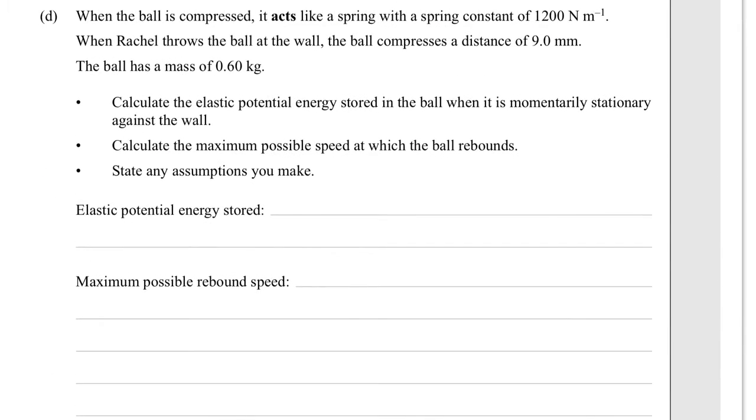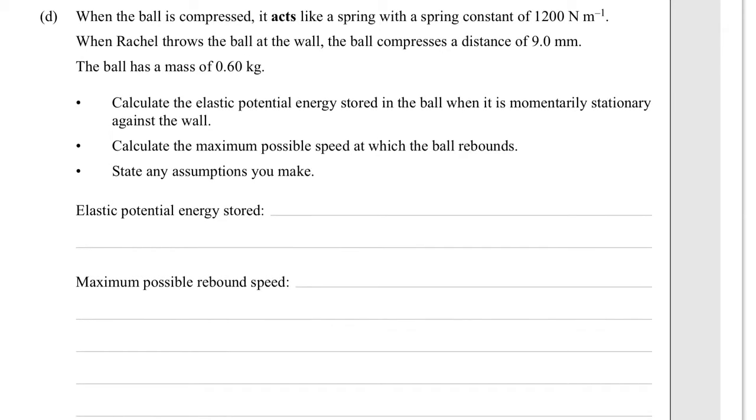Part D. When the ball is compressed, it acts like a spring with a spring constant of 1200 newtons per meter. So let's just write that as K for our spring constant. When Rachel throws the ball at the wall, the ball compresses a distance of 900 millimeters. We're talking about springs. So that would be our X if we're using F equals KX.